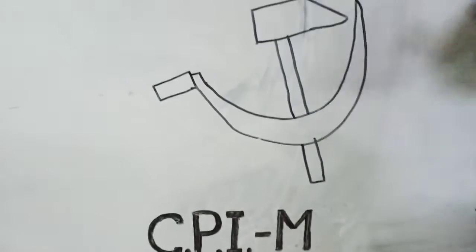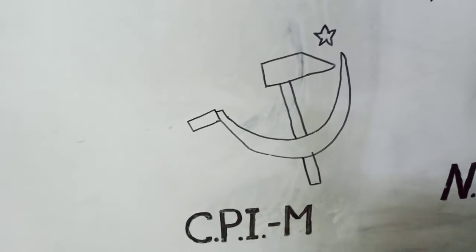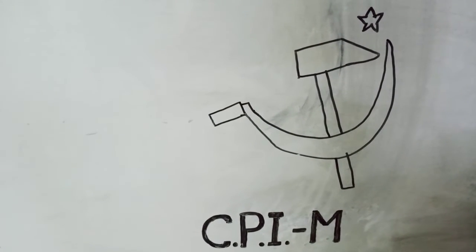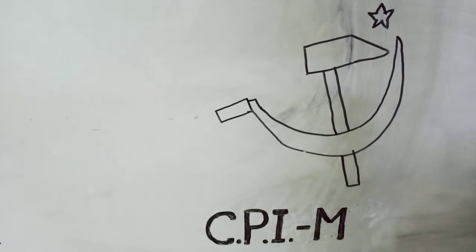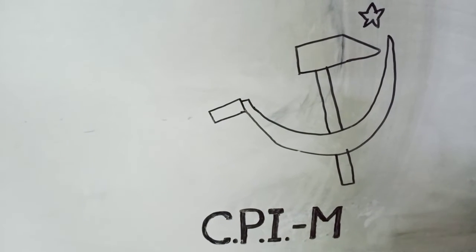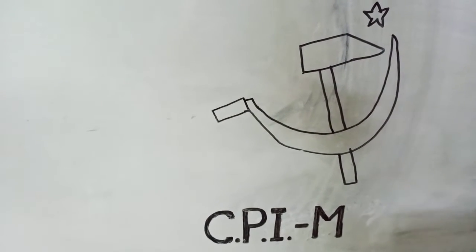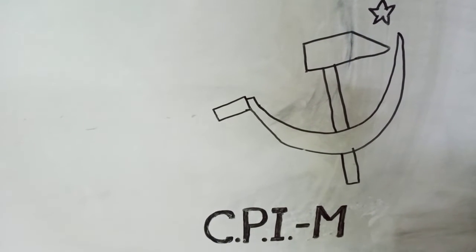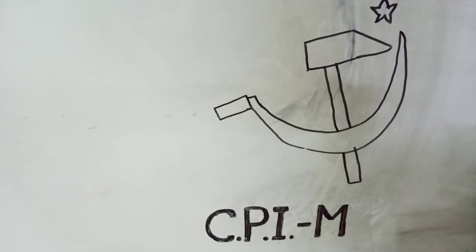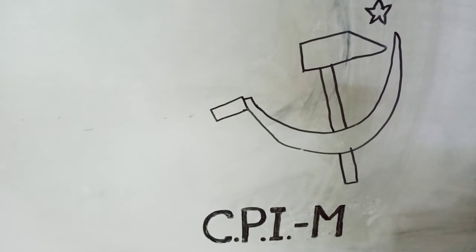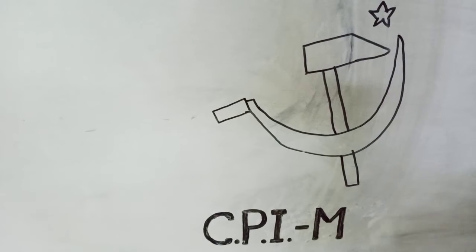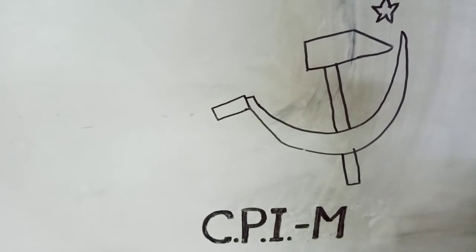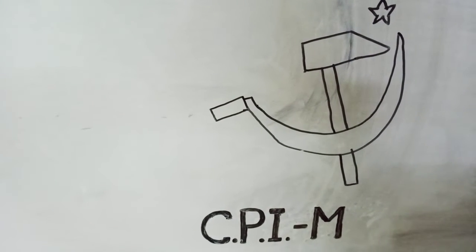The CPI-M (Communist Party of India, Marxist), founded in 1964, believes in Marxism-Leninism and supports Socialism, Secularism, and Democracy. It opposes Imperialism and Communalism and accepts democratic elections as a useful and helpful means.